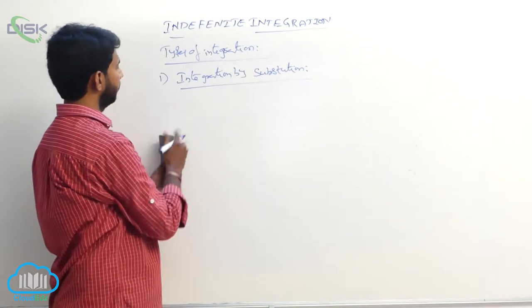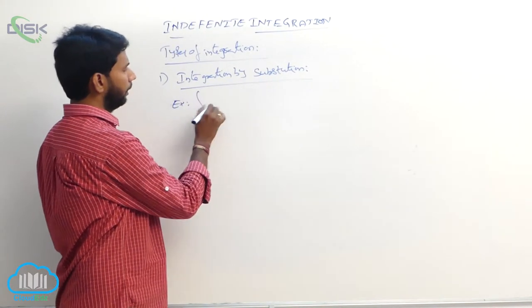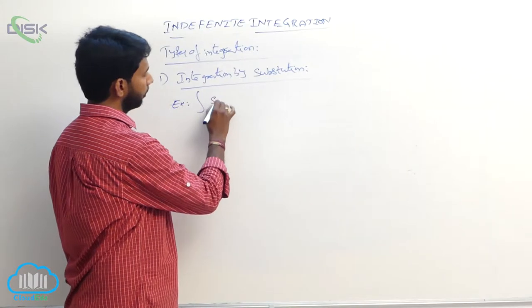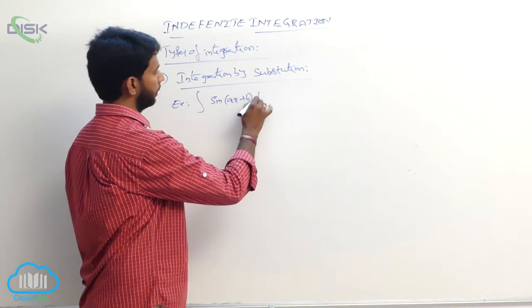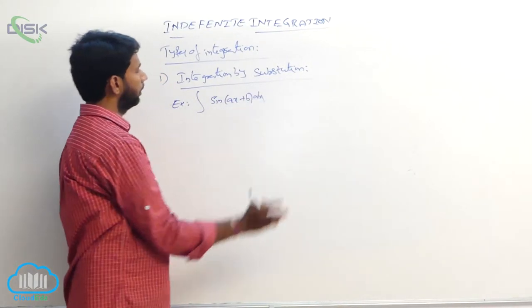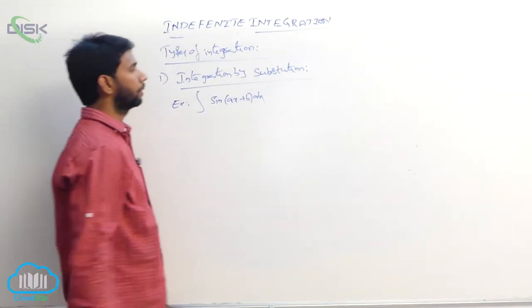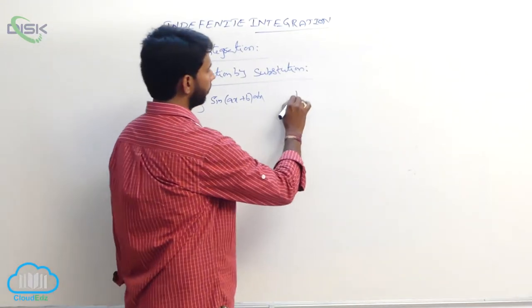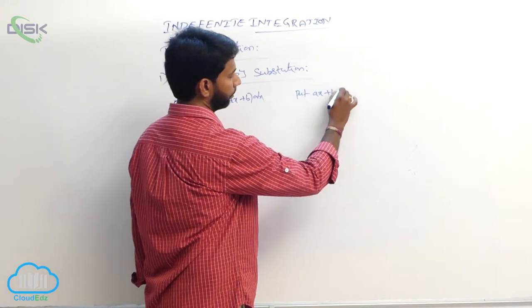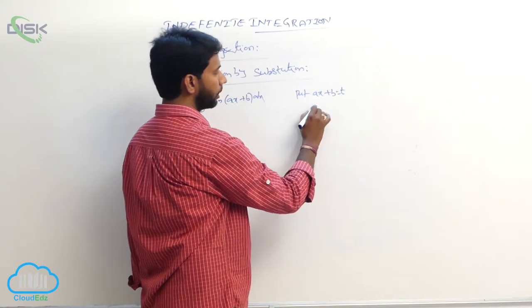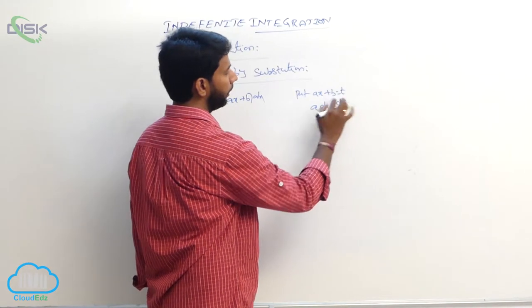Suppose an example: integral of sin(ax + b) dx. Put ax + b equal to t, then differentiate both sides: a dx equals dt, so dx equals dt/a.